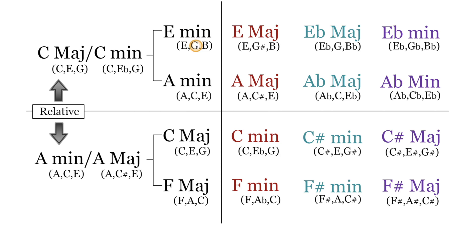If you take the third of the chord G, and you simply raise it a half step to G sharp, you get E major. The next chord is E flat major.